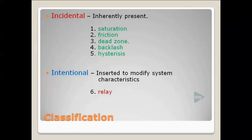Moving to the classification part: a system is divided into two categories — incidental and intentional. Incidental means the non-linearity is inherently present in the system, for example: saturation, friction, dead zone, backlash, and hysteresis. Intentional means we give characteristics to the system from outside in order to modify the system's behavior, for example, relay non-linearity.